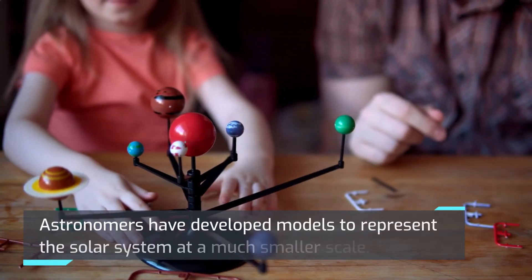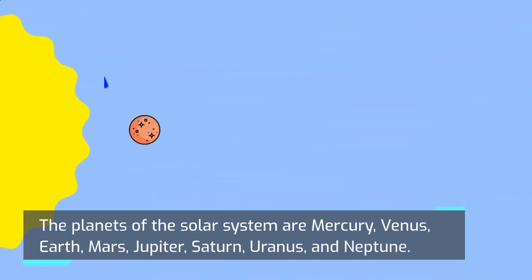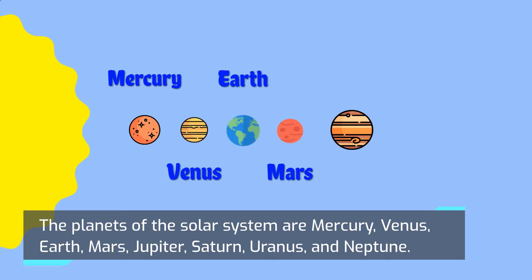Astronomers have developed models to represent the solar system at a much smaller scale. The planets of the solar system are Mercury, Venus, Earth, Mars, Jupiter, Saturn, Uranus, and Neptune.